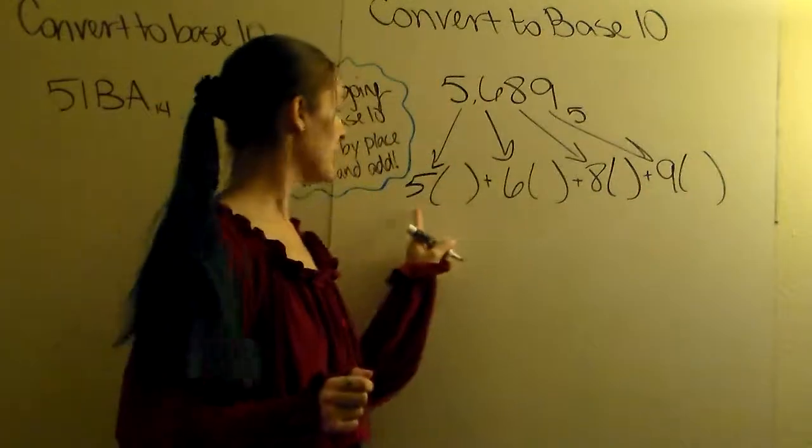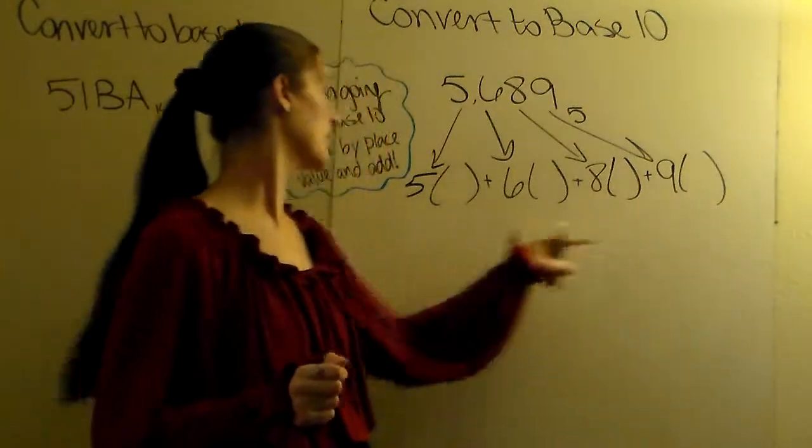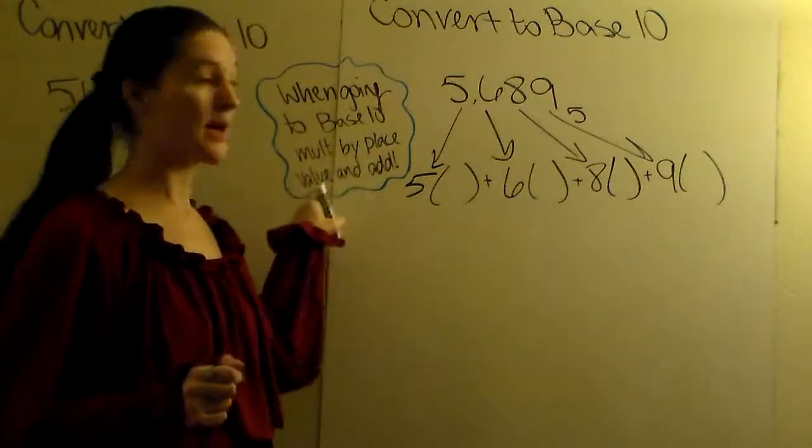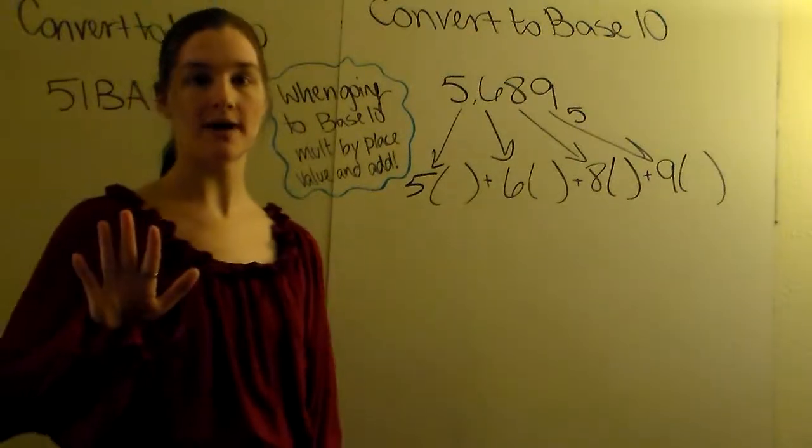Alright. So we've got 5 times something plus 6 times something plus 8 times something plus 9 times something. We're going to multiply by place values and add. So we need place values for base 5.